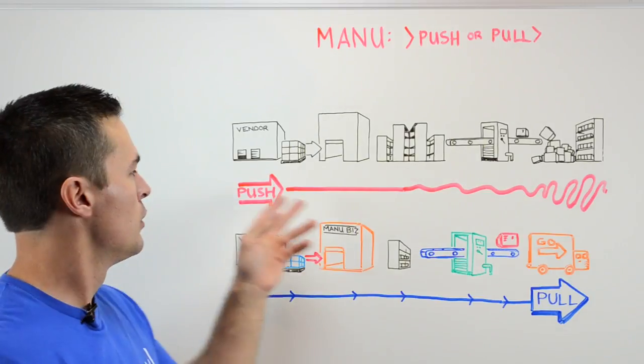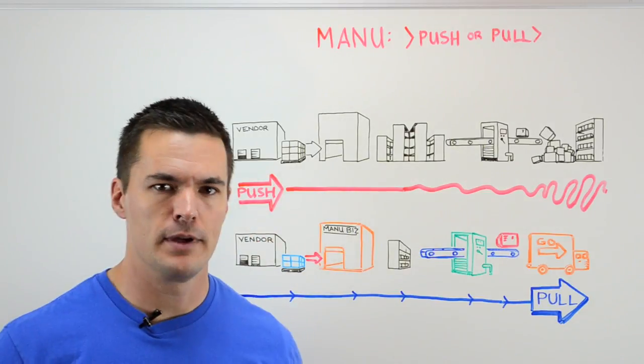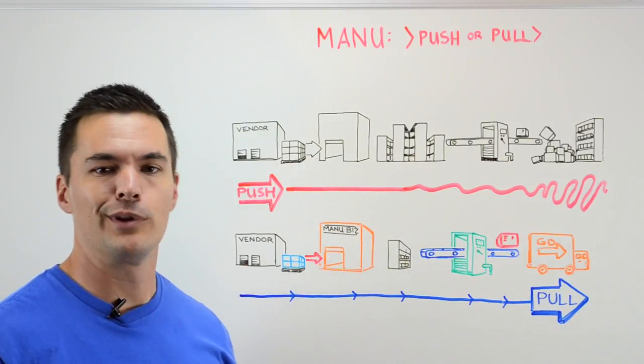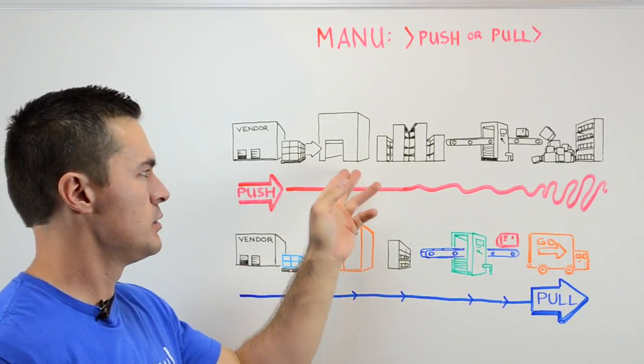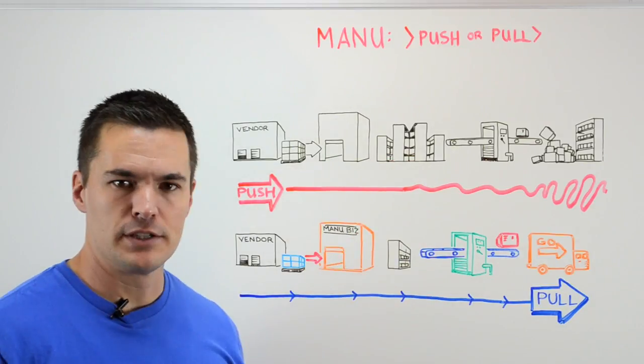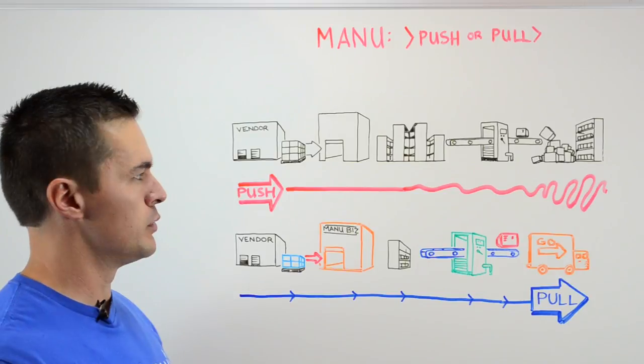So quick overview. With the push side of manufacturing, you've got your vendor, you're ordering probably a typical amount from them, they ship it to your business, and you have to allocate a certain amount of space for storage, waiting to use it.